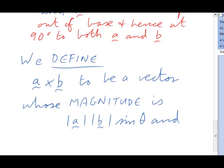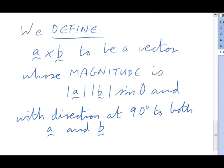sin theta, and whose direction is at 90 degrees to both the original a and b. And in the context of our parallelepiped, it's up rather than down.